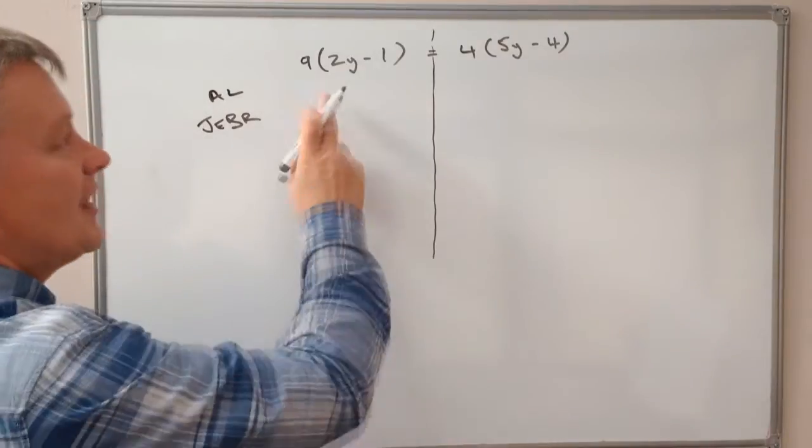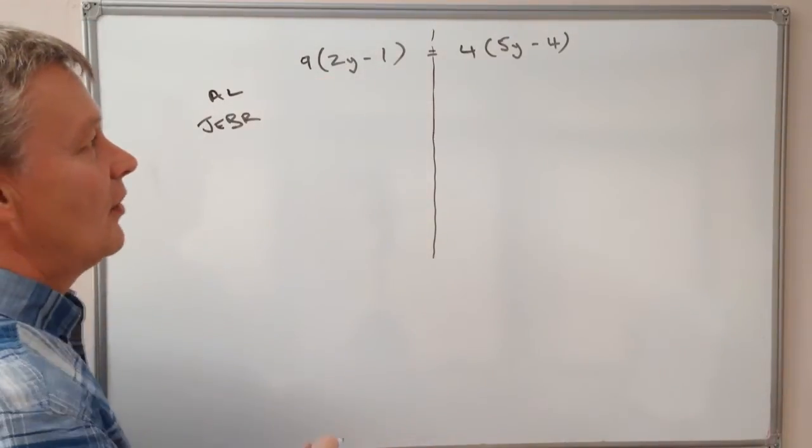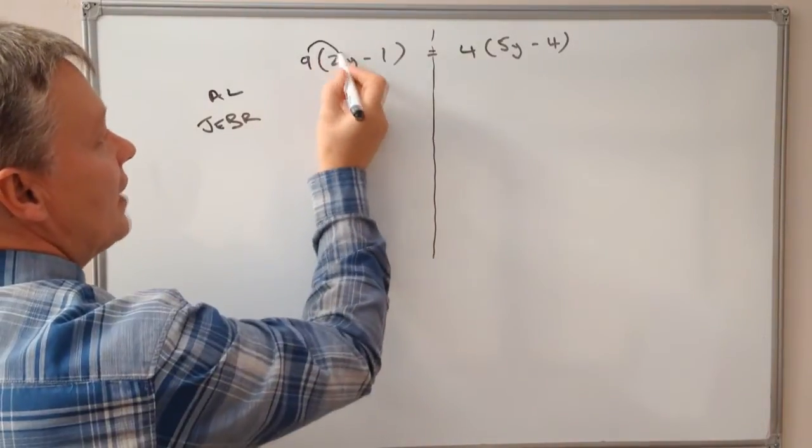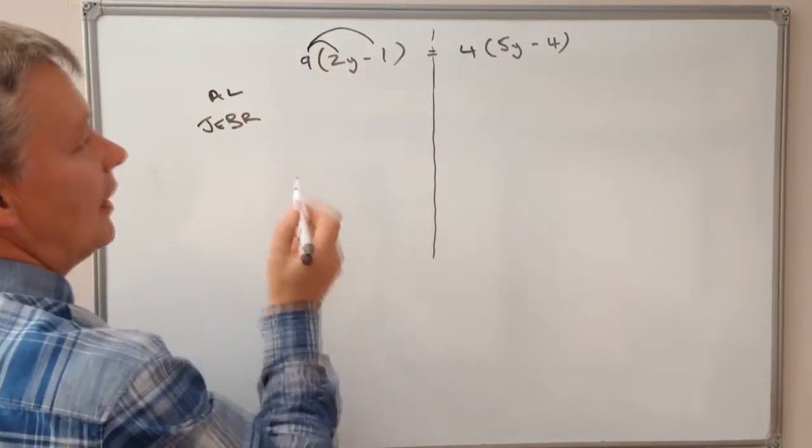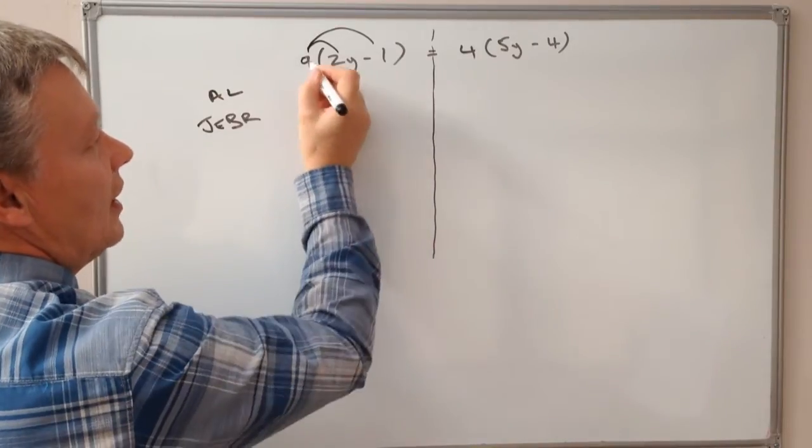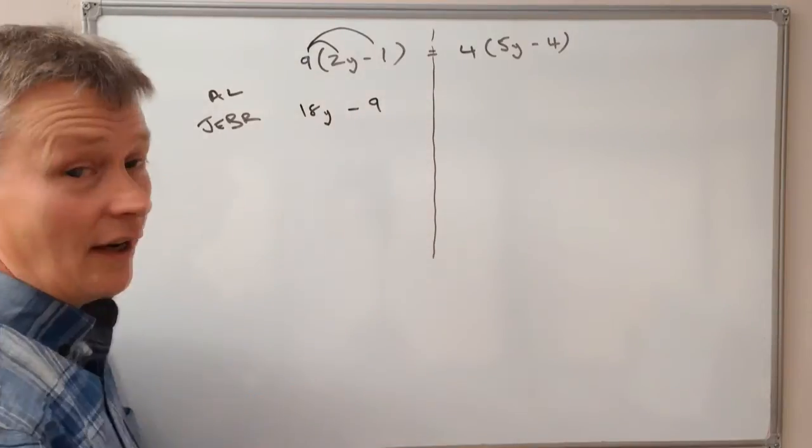The first thing we have to do is get rid of these brackets. I've got 9 multiplied by the term in the bracket, so I need to multiply out. 9 times 2y is 18y, and 9 times minus 1 is minus 9.